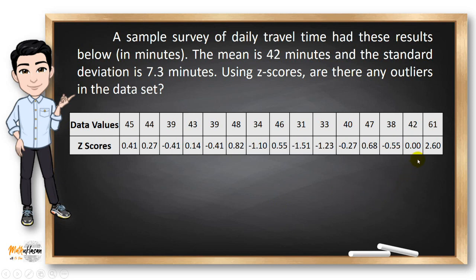Also, notice that 42 has a z-score of 0. That's because 42 is equal to our sample mean, which is 42 minutes.